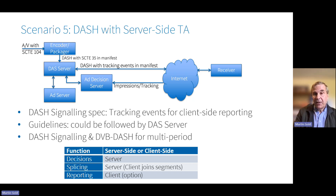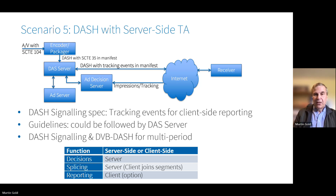As DASH implies unicast delivery, we also consider server side ad substitution. The DASH signalling specification defines client side reporting that can be used in this case. The DVB profiling of signalling is relevant to a server side interface between the encoder producing DASH and the DASH server. The DASH server is likely to operate with a VAST ad decision server, for which the DVB guidelines will be applicable. The DASH manifest is modified by the DASH server to describe the specific ad substitutions for each client. The simplest approach is to create a multi-period manifest so that the ad does not need to be modified for each substitution — meaning the client handles a more complex multi-period stream and performs the stitching together of program and ad content according to the manifest.